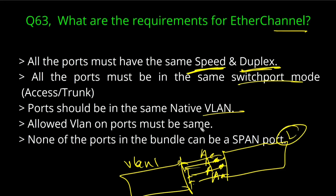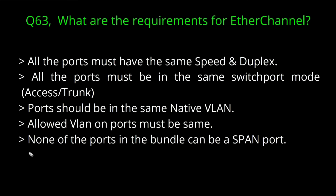Fourth, allowed VLANs on the ports must be the same. If one interface is allowing VLAN 1, 2, and VLAN 100, then all interfaces in the bundle must allow the same VLANs. Fifth and last, none of the ports in the bundle can be a SPAN port — SPAN stands for Switch Port Analyzer.